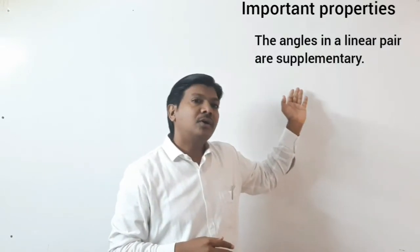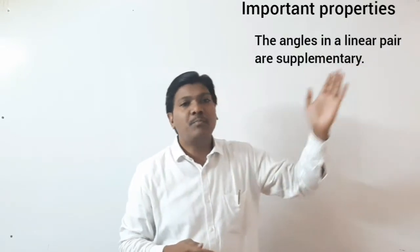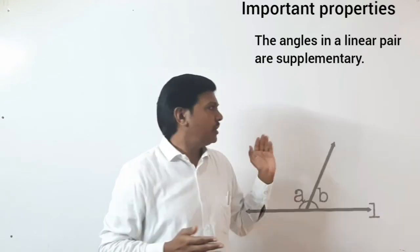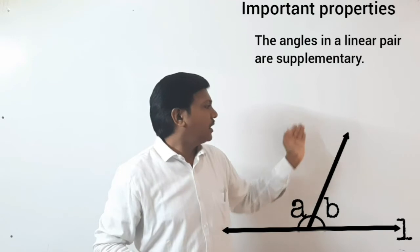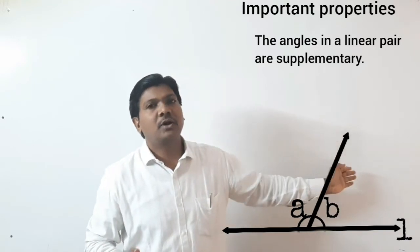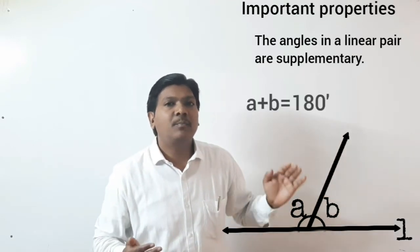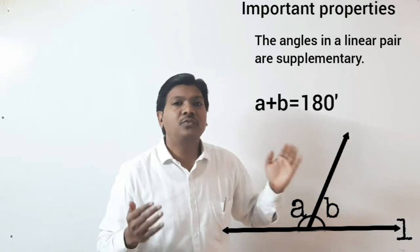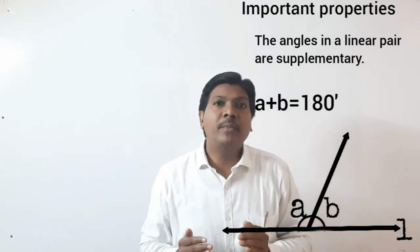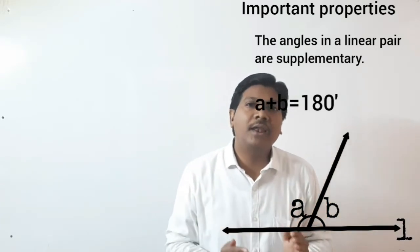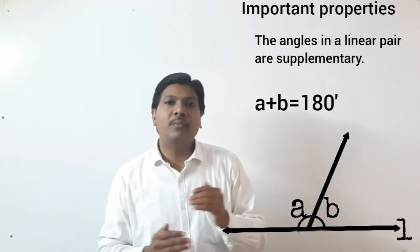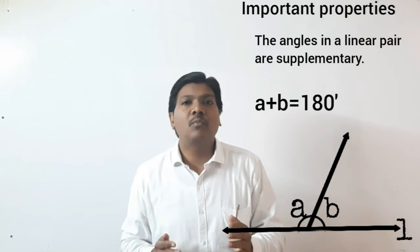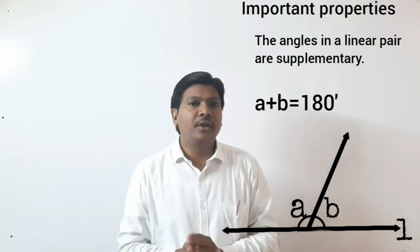The second property is that angles in a linear pair are supplementary. As seen in this diagram, line L is given, and angle A and angle B are a linear pair. The sum of these two angles is supplementary, meaning the sum of two angles is 180 degrees.